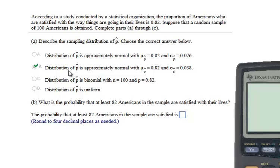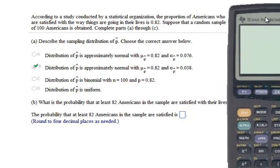The distribution of p hat is approximately normal with p hat equals 0.82. So we've got to find sigma of p hat, the standard error of the sampling distribution of sample proportions. What we're going to do is use our formula, which is sigma of p hat is the square root of p times q over n.